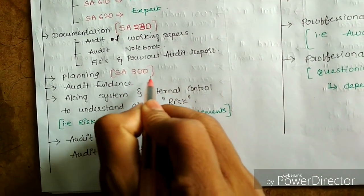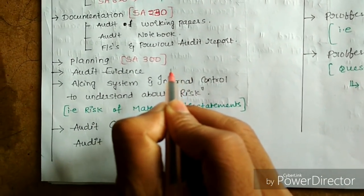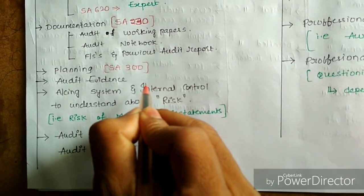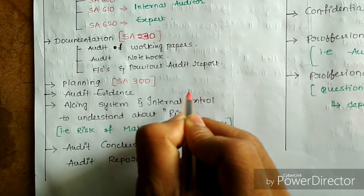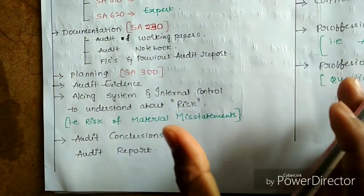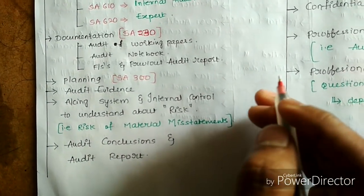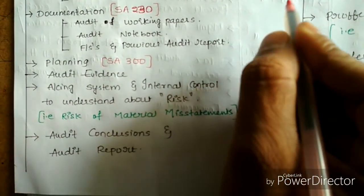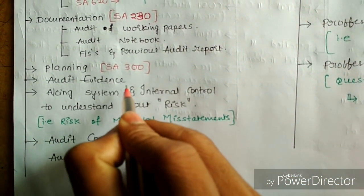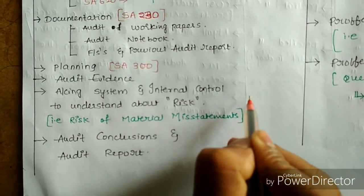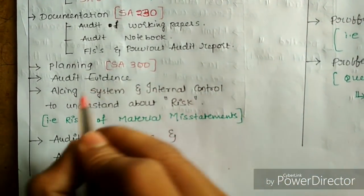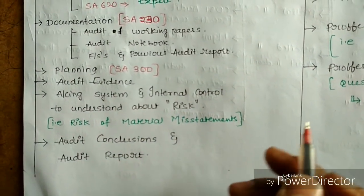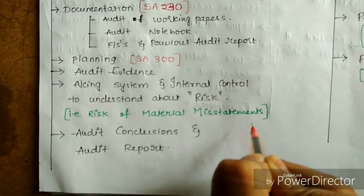Planning — SA 300 governs this. Audit planning means what is going to be done, framed as a future course of action. Next, audit evidence: the auditor should obtain all evidence with respect to any suspicion or doubt and get clarity from management. This includes understanding the accounting system, internal control system, risks related to the internal and accounting systems, and risk of misstatements — essentially verification of all books of accounts.